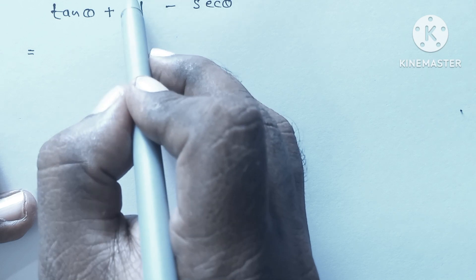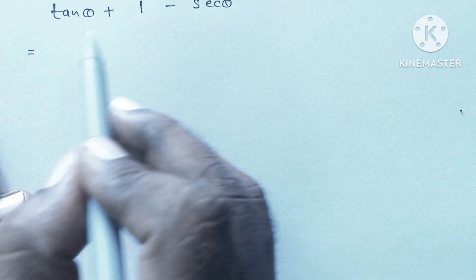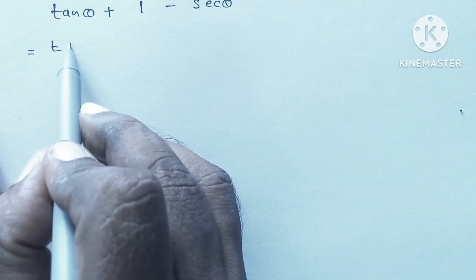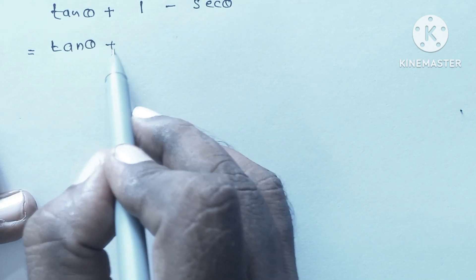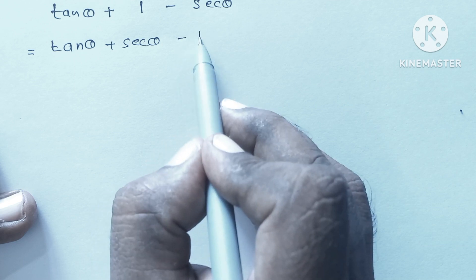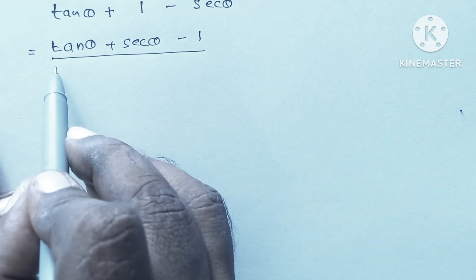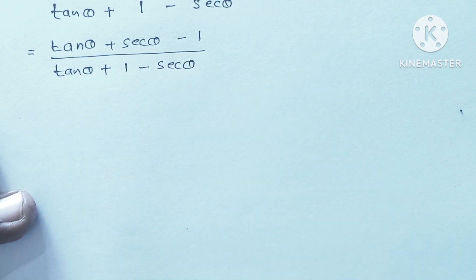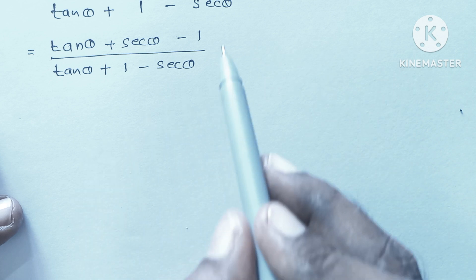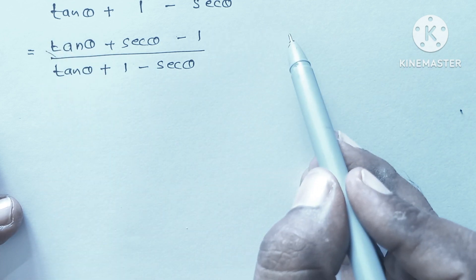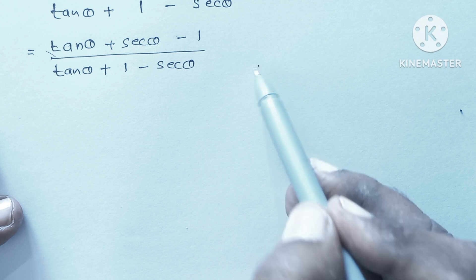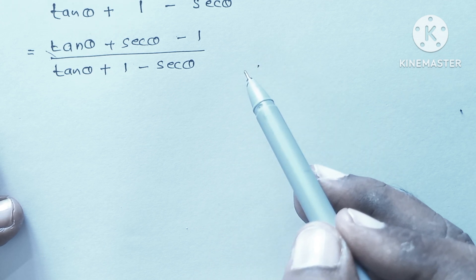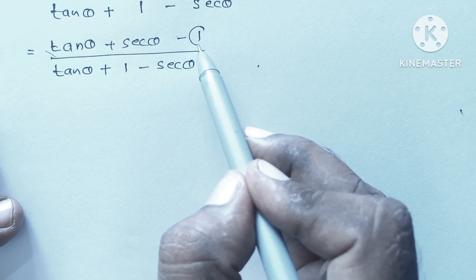Now let's write the minus 1 at the end for convenience, so we can write it as (tan θ + sec θ - 1) / (tan θ - sec θ + 1). For the next step we have many methods, like multiplying by (tan θ - sec θ) in numerator and denominator, but we will follow a method where we replace the 1 in the numerator.